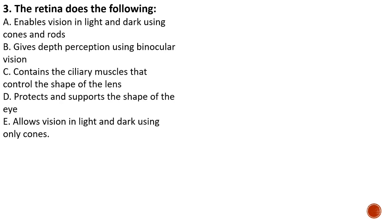Question number three: the retina does which of the following? A) enables vision in light and dark using cones and rods, B) gives depth perception using binocular vision, C) contains ciliary muscles that control the shape of the lens, D) protects and supports the shape of the eye, E) allows vision in light and dark using only cones. The correct answer is A — it enables vision in light and dark using cones and rods, the two types of cells present in the retina.